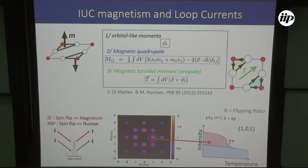By using a polarized neutron beam where the neutron spin is polarized, we can disentangle the magnetic and nuclear signals. The nuclear signal goes into the non-spin-flip channel, while magnetic scattering appears in the spin-flip channel. The magnetic scattering pattern expected in the HK plane for the loop current model shows strong positions like (0,1,L) and (1,0,L) where the signal should be measurable.